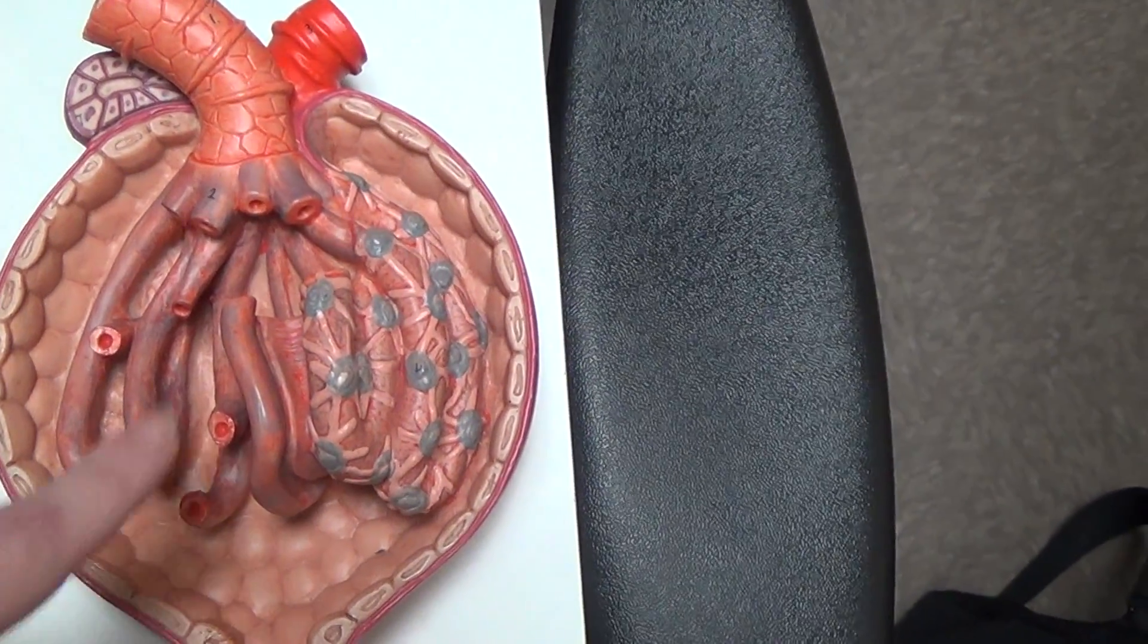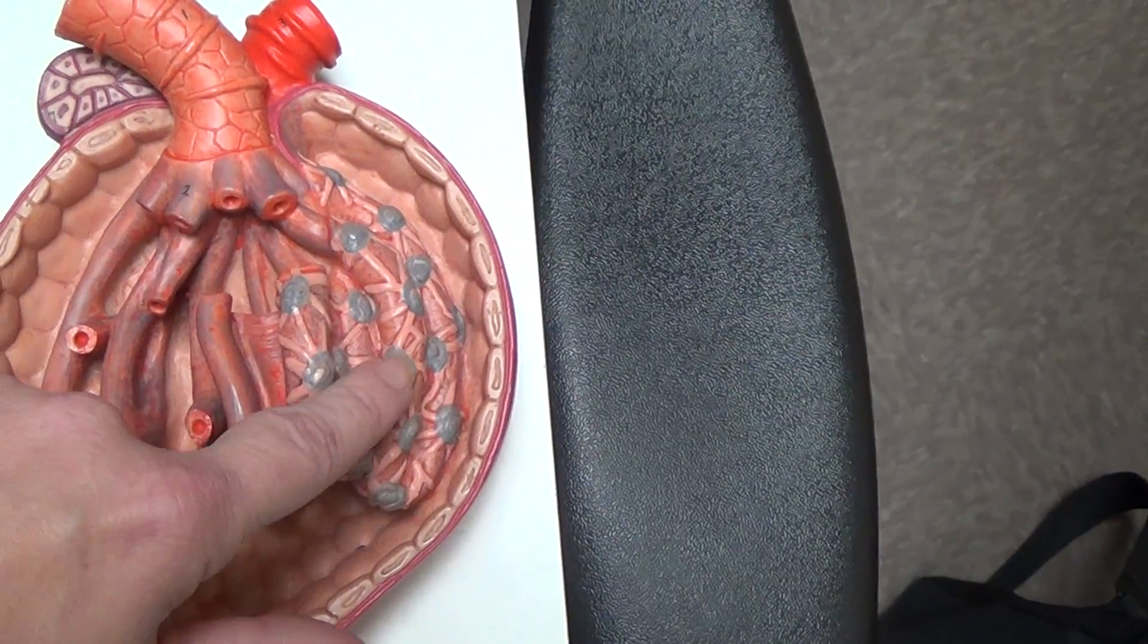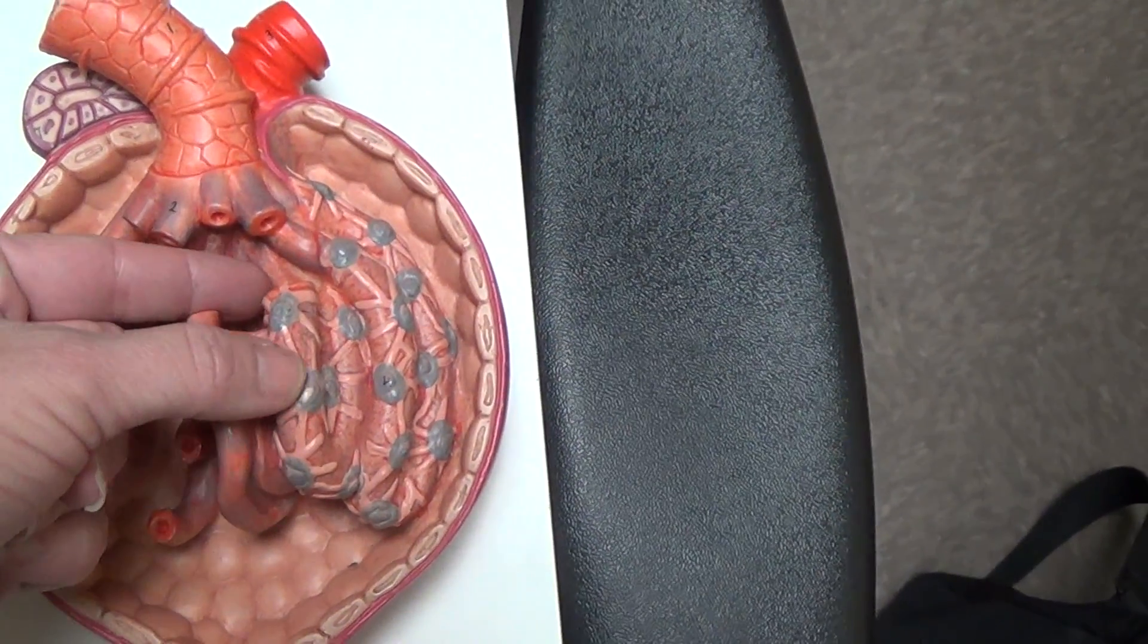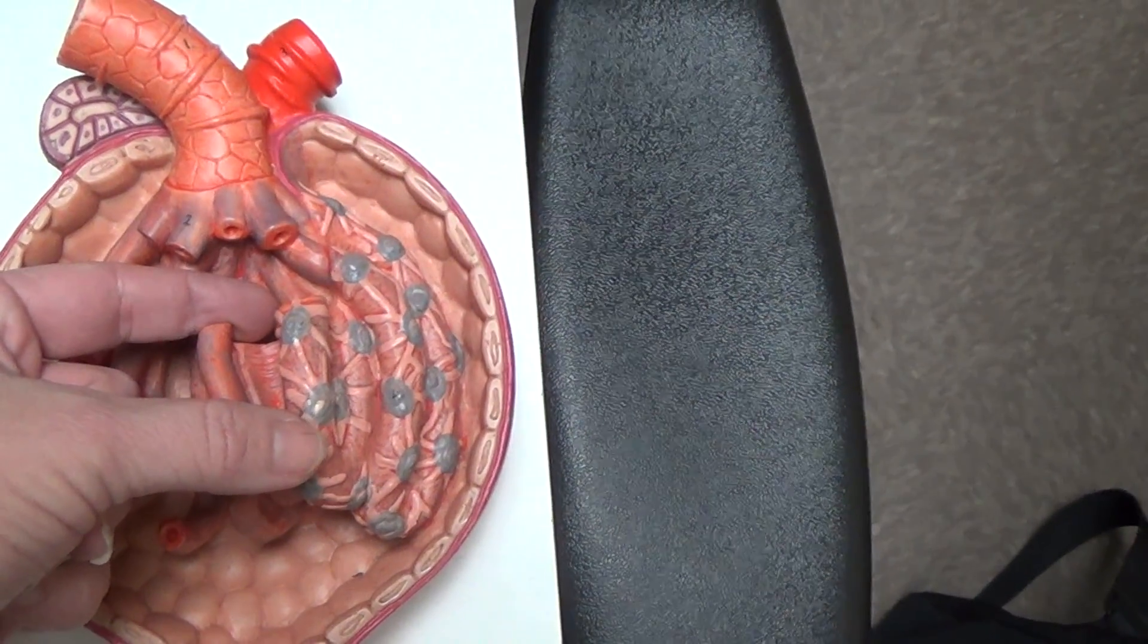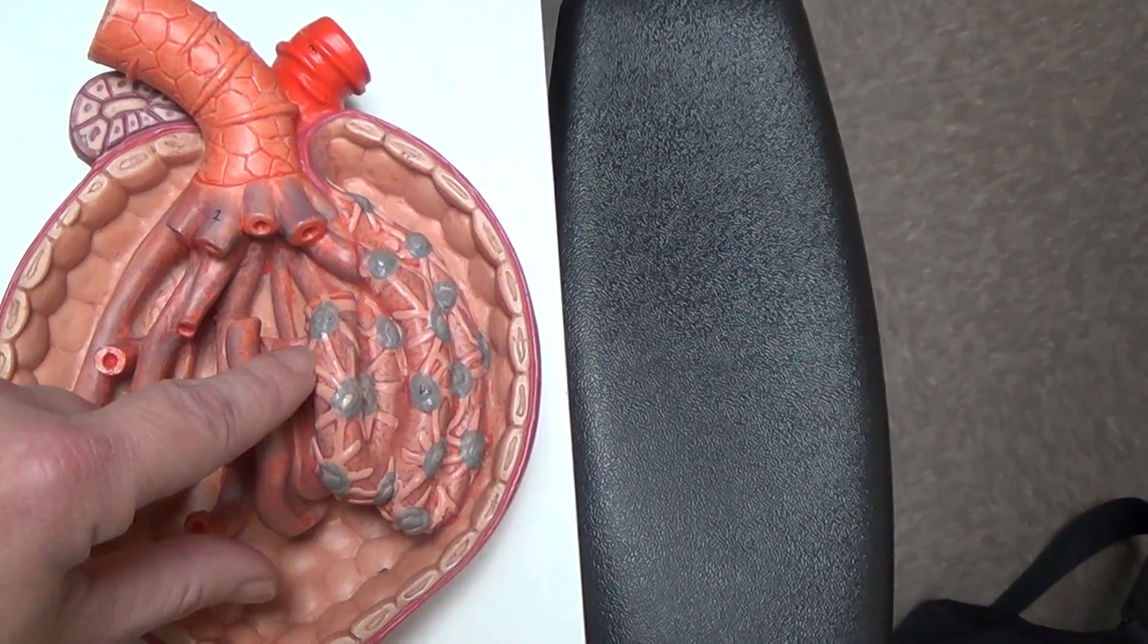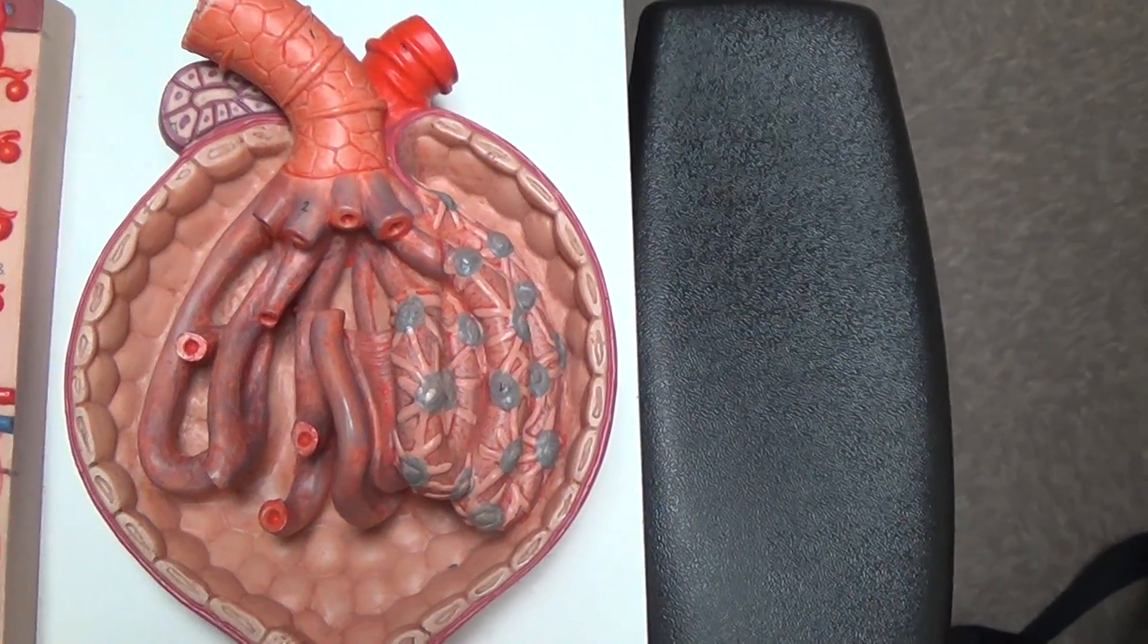On the glomerulus we have cells. These are called podocytes. The lines between the cells are called pedicels. And the spaces that you see between the lines and cells are called slit pores.